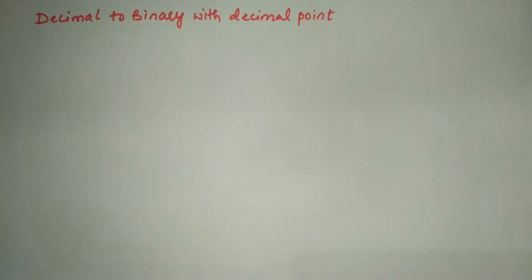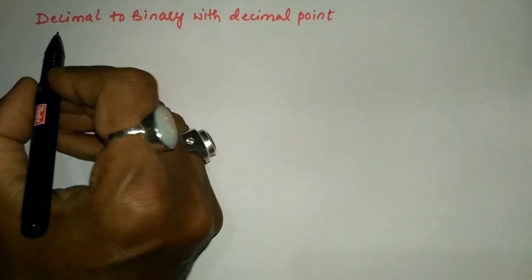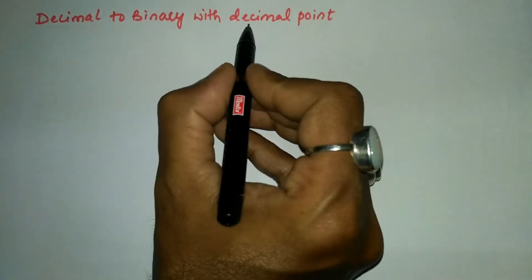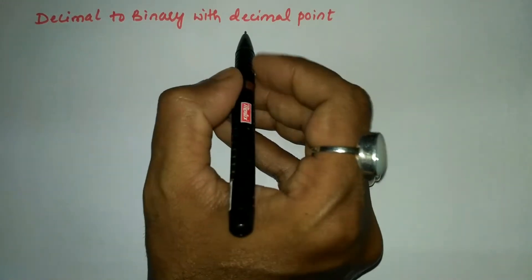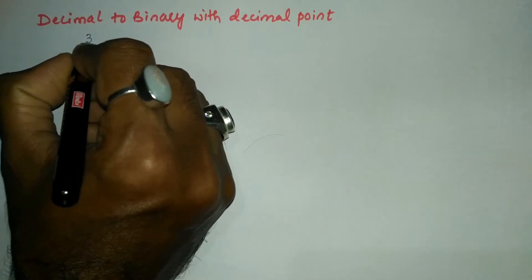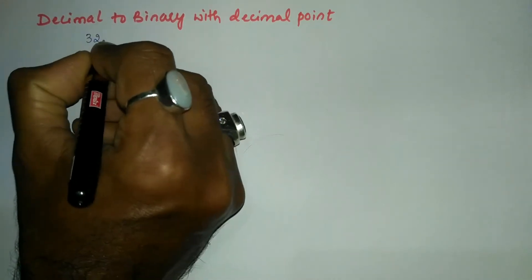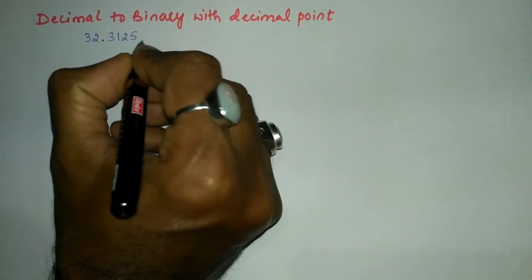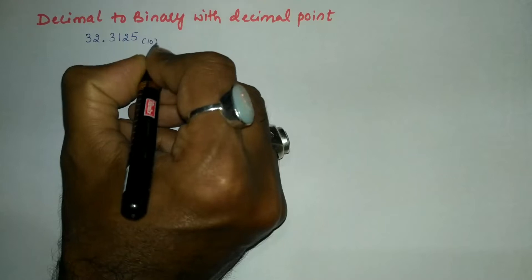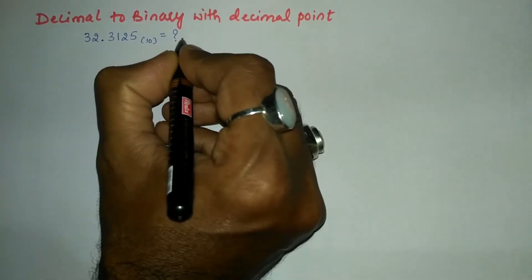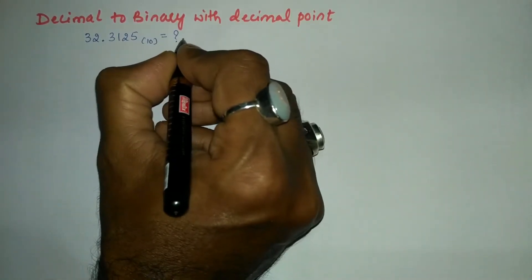Hello and welcome to Vision Academy. In this video we are going to study decimal to binary with decimal point. Let us take an example: 32.3125 to the base 10 — we need to convert this into binary notation.